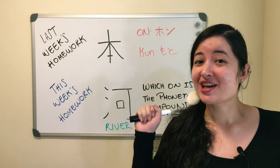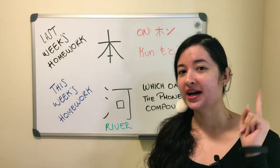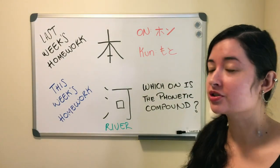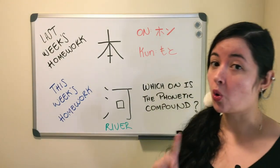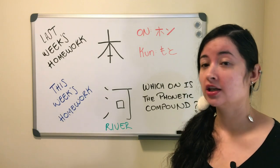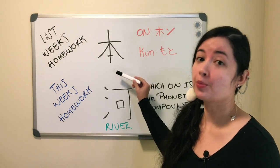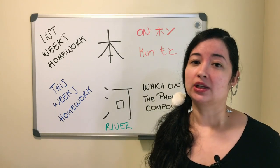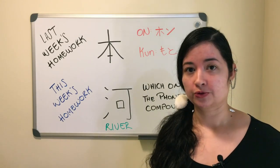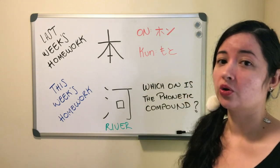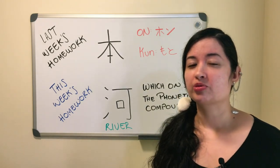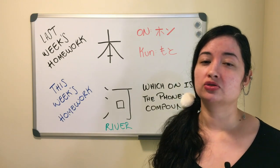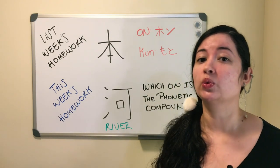Now it's homework time! Let's start by reviewing last week's homework. Last week's homework was, can you tell me what the ON and KUN reading for the kanji of this book was? The ON reading is HON and the KUN reading is MOTO. Usually HON is used to represent a meaning with books and MOTO is used to represent a meaning with origin.